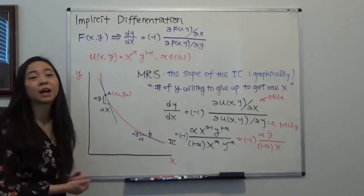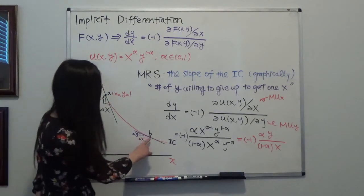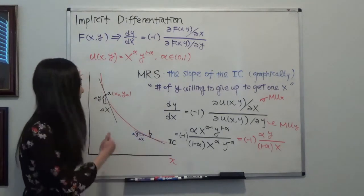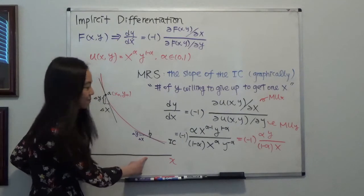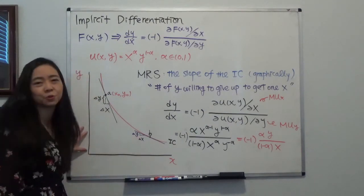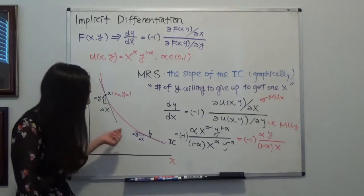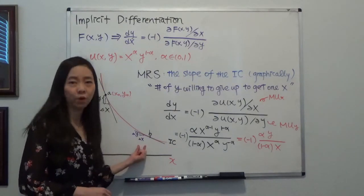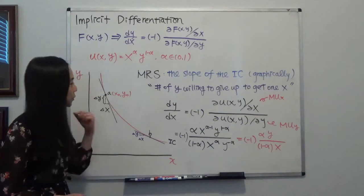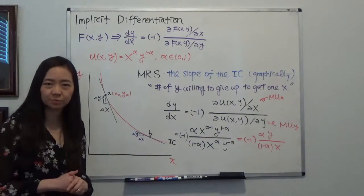Which makes sense because you already have a lot of y, at this time you want to have more x. But at point B, you can see the slope is a lot flatter. That tells you, at this point you already have a lot of x and you have very little y. So you're only willing to give up a tiny bit of y in order to get one unit of x. So that is the marginal rate of substitution.